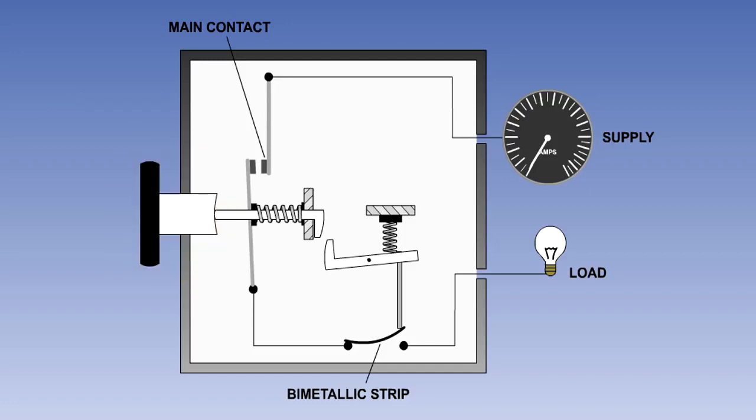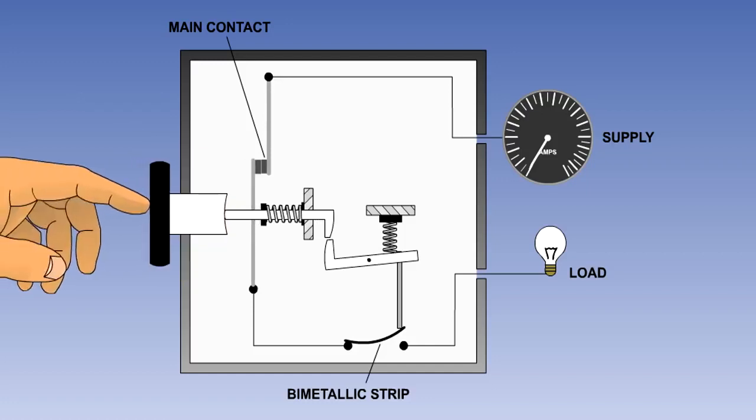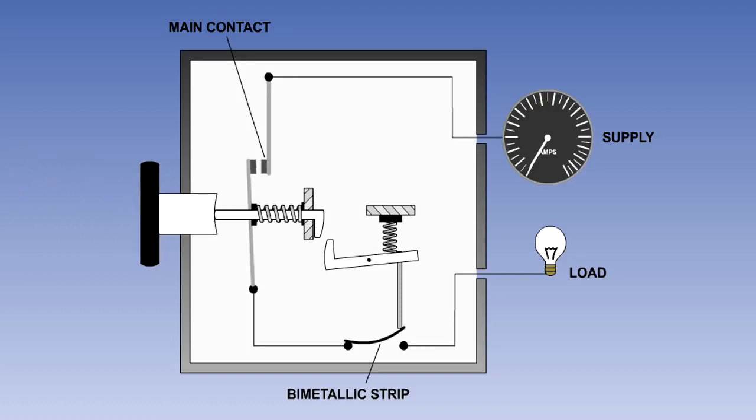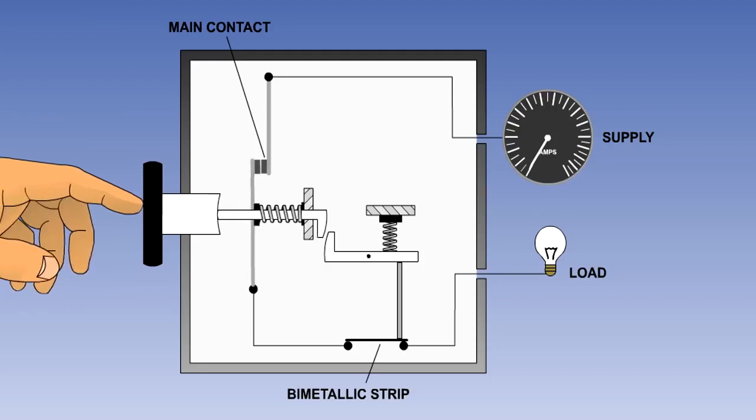If an immediate reset attempt is made, the current will not flow in the circuit, because the bimetallic strip contacts will still be open, and the button will not latch in. Only when the bimetallic strip has cooled sufficiently will the circuit be able to be completed again.